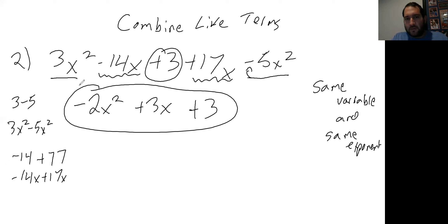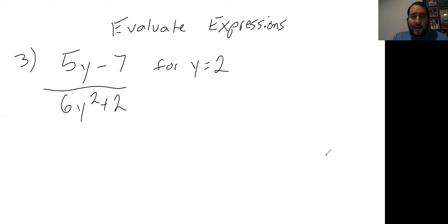Now the final concept we're going to look at is how to evaluate expressions given a value of a variable. Our problem is: 5y minus 7 divided by 6y squared plus 2, for when y equals 2. So pause, write this problem down, try it, or follow along with me.